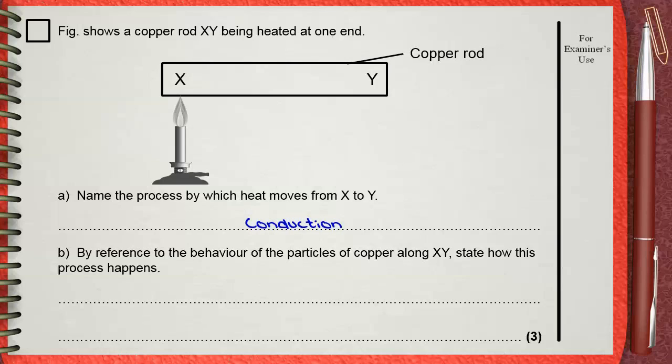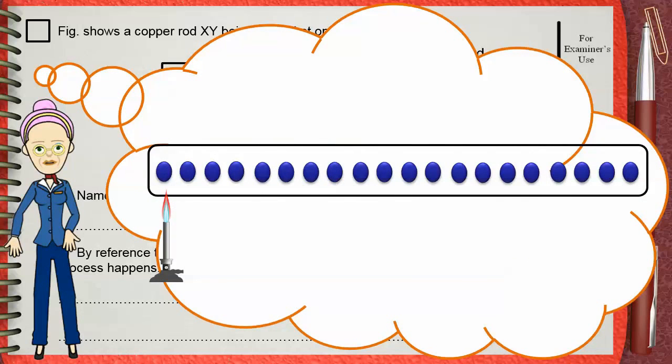Question b wants an explanation of what happens. Let's have a look inside the copper rod. These are the copper atoms.